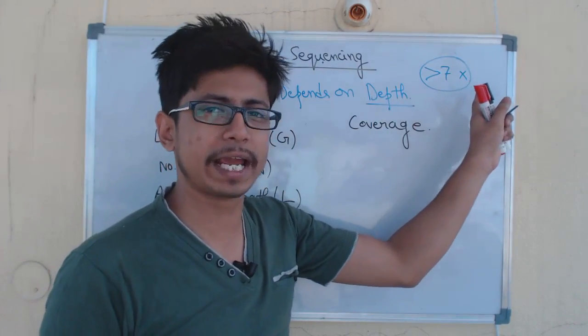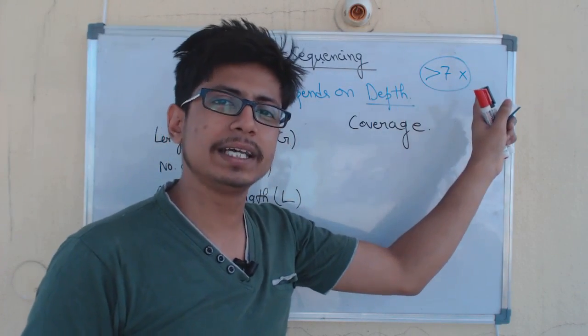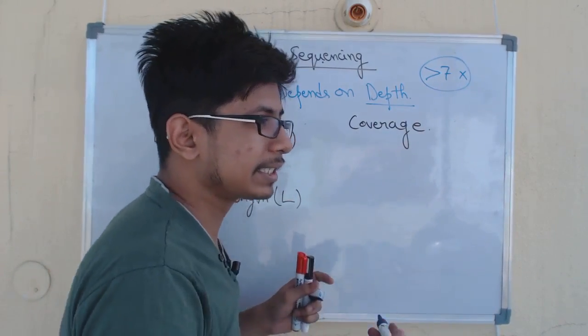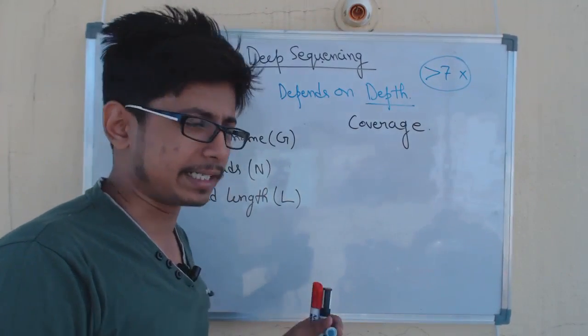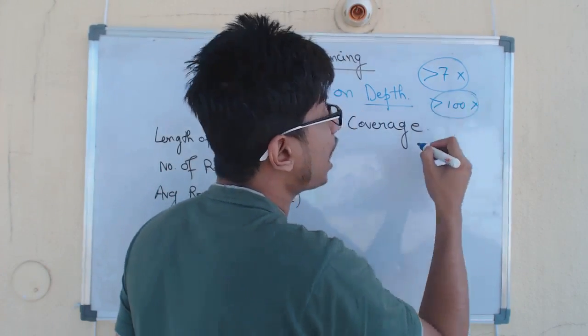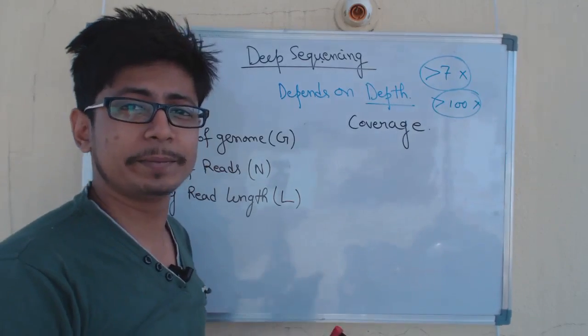But if it is more than seven times, if the sequencing is read through more than seven times, that is known as deep sequencing. Nowadays, we also run the same sequence data, the same DNA fragments, more than even a hundred times. That is known as ultra-deep sequencing.